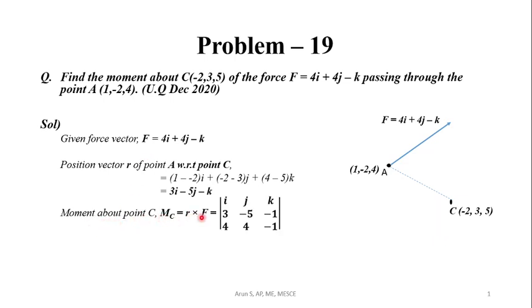MC is given by R × F, which equals the determinant with i, j, k in the first row, the coefficients of position vector R (3, -5, -1) in the second row, and the coefficients of force vector F (4, 4, -1) in the third row.